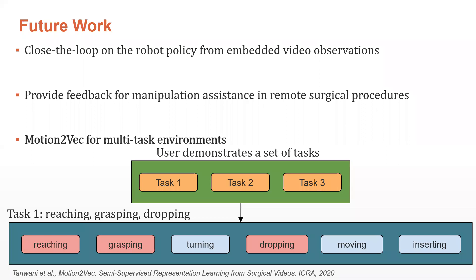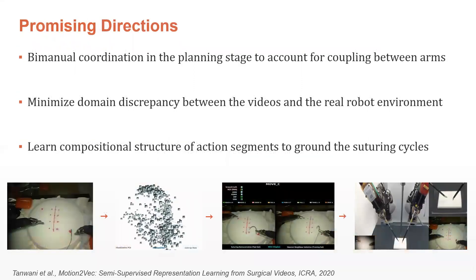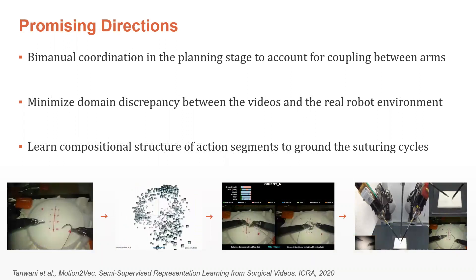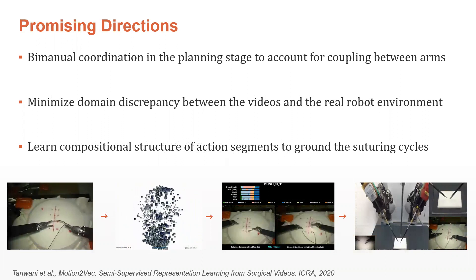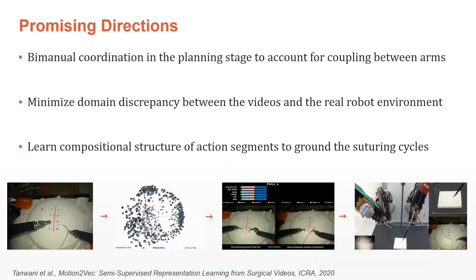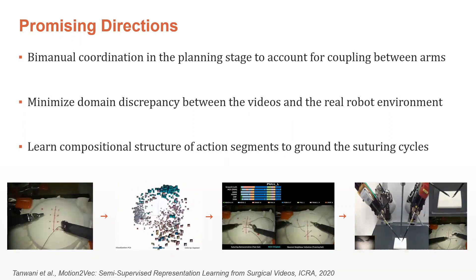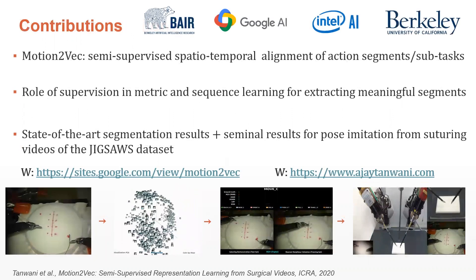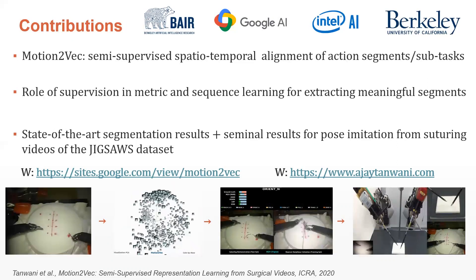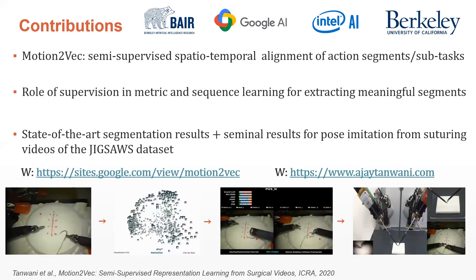In future work, we plan to close the loop on the robot policy from the embedded video observations. We are also interested in providing useful feedback for training and assistance in remote surgical procedures. Our ongoing work features Motion-to-Vec in multi-task environments where a library of learned invariant segments is used for imitation in accordance with the demonstrated task. Promising future directions include bimanual coordination in the planning stage, minimizing domain discrepancy between videos and the real robot environment using adversarial learning methods, and learning the compositional structure of action segments given the cyclic nature of suturing tasks. Please visit the website for supplementary details and code.